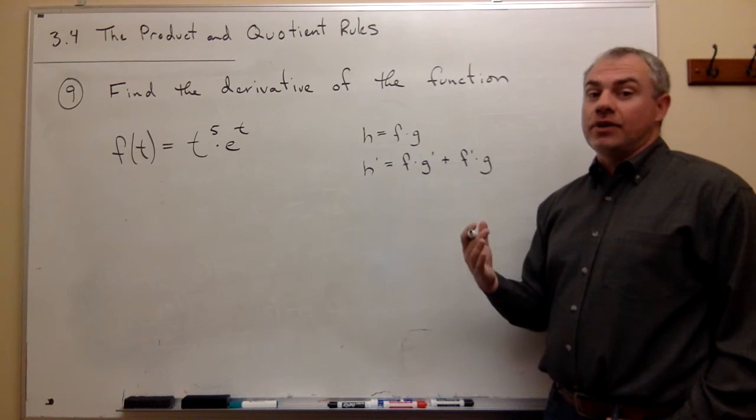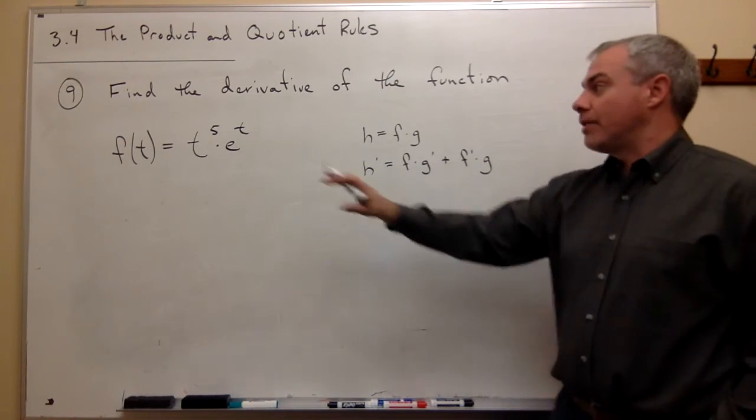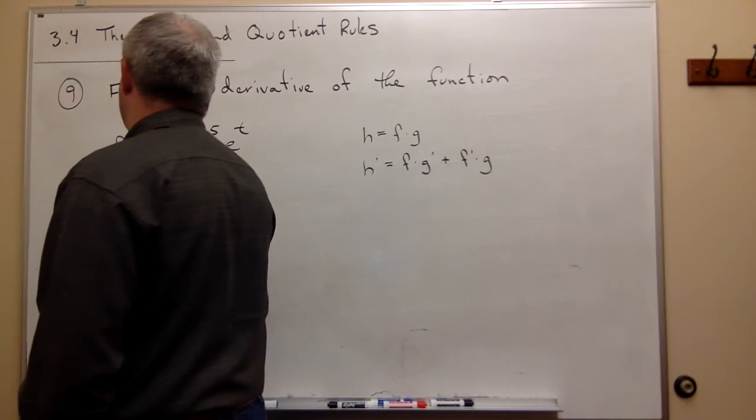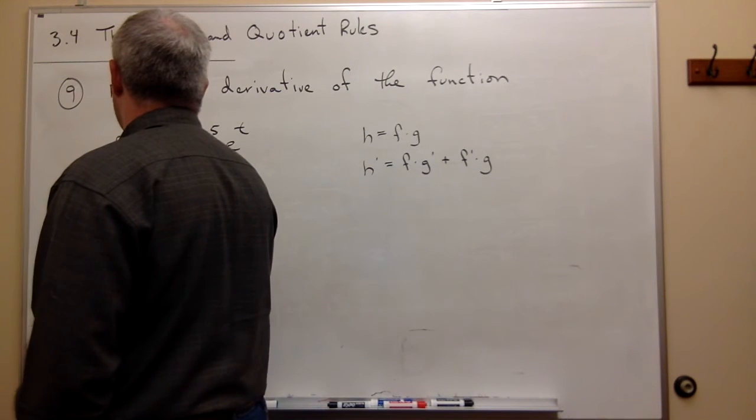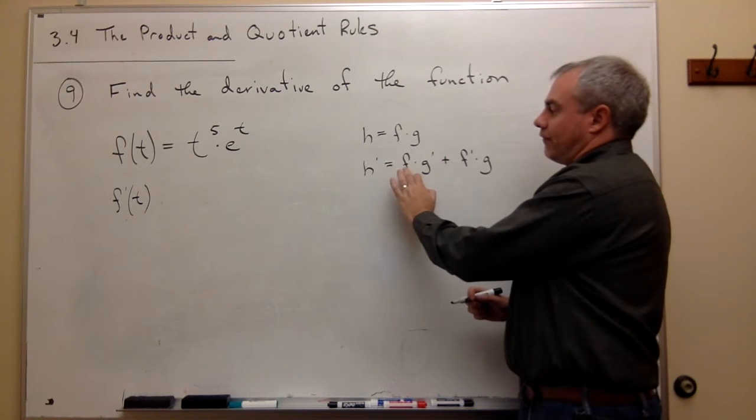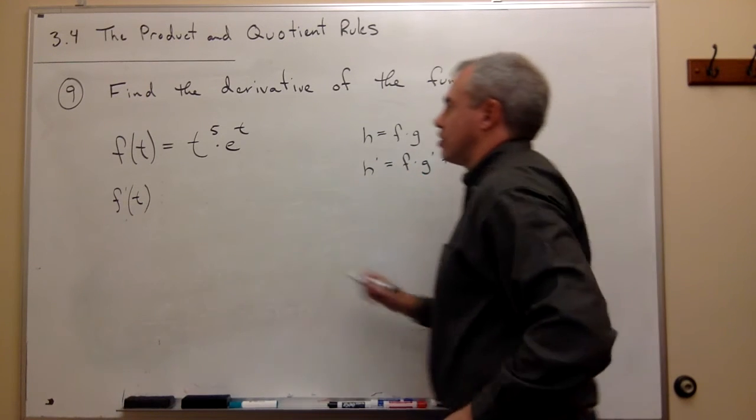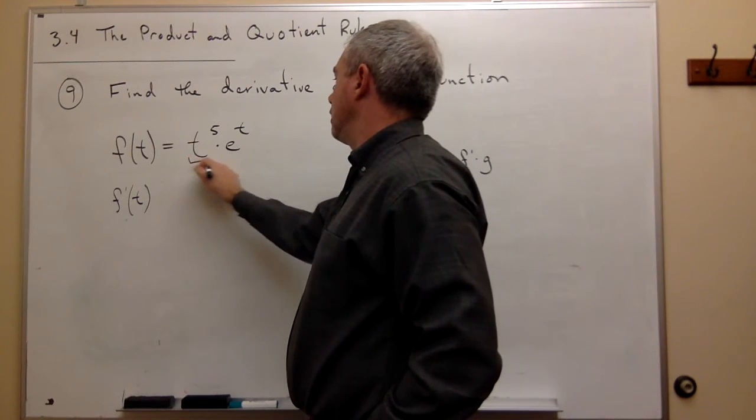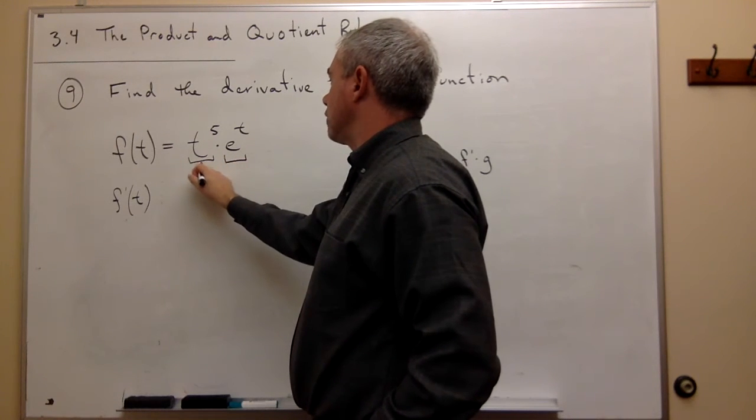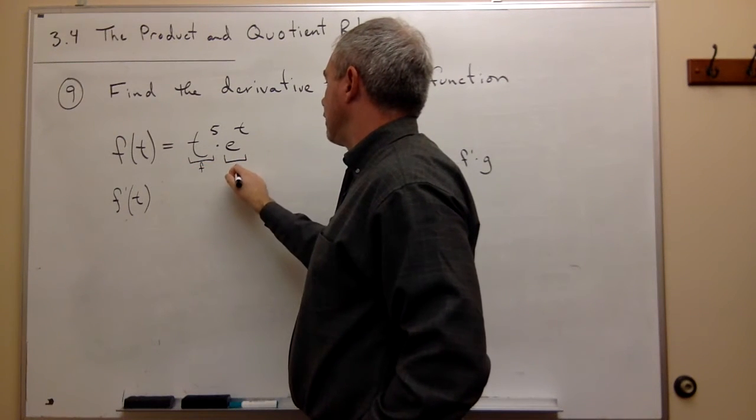Okay, now that we know this, let's go back over here and actually take that derivative. So we have f prime of t. Over here, what we're told is we should leave the first function alone. So we have two functions here. I'll call this one f, and I'll call this one g.